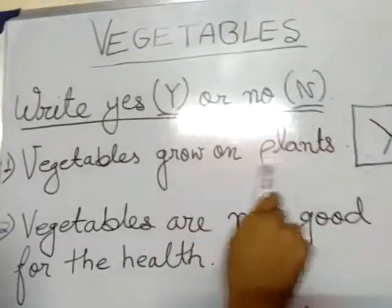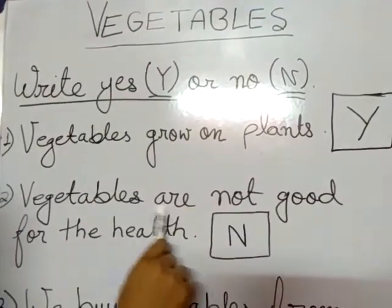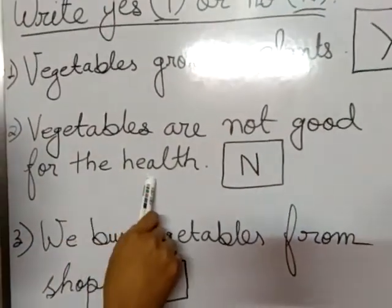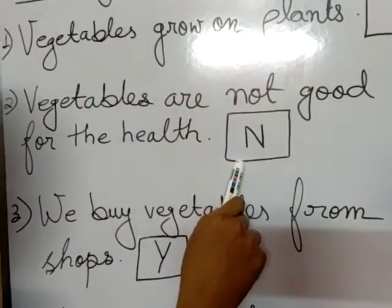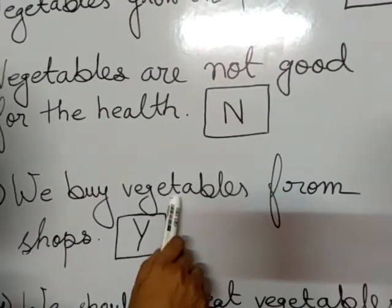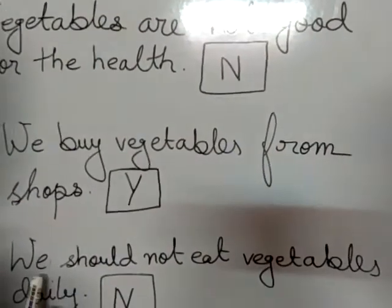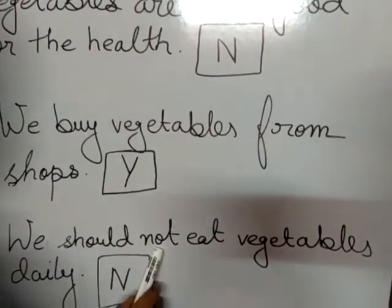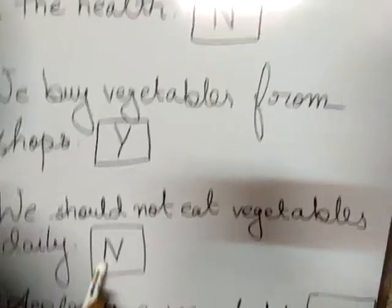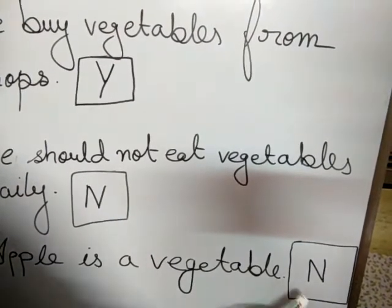Now let's go through the answers again. Vegetables grow on plants — yes. Vegetables are not good for the health — no. We buy vegetables from shops — yes. We should not eat vegetables daily — no. Apple is a vegetable — no.